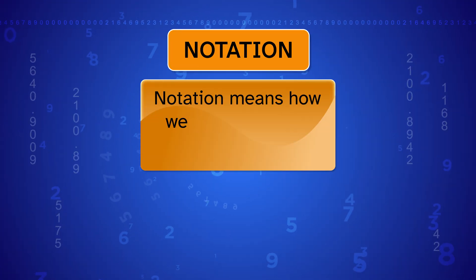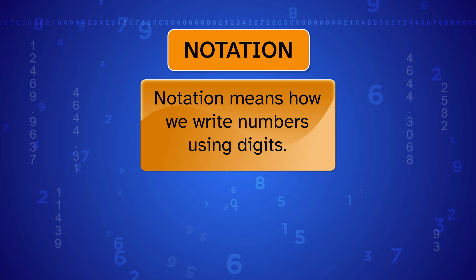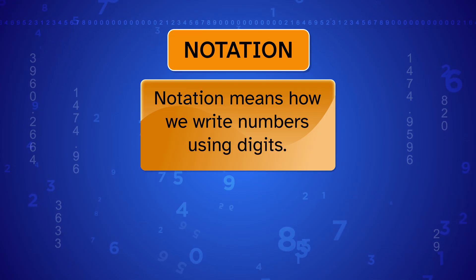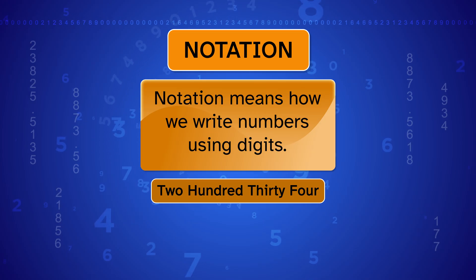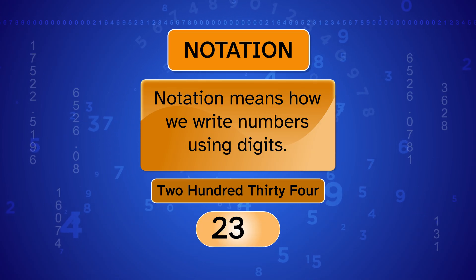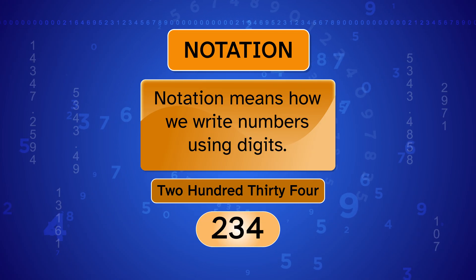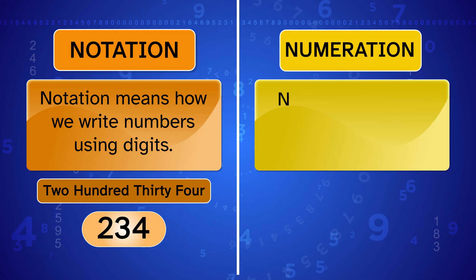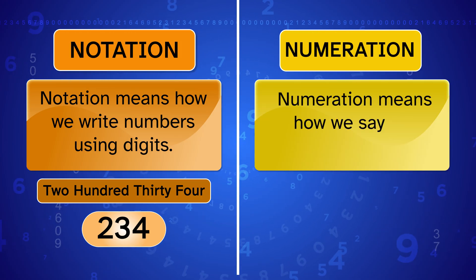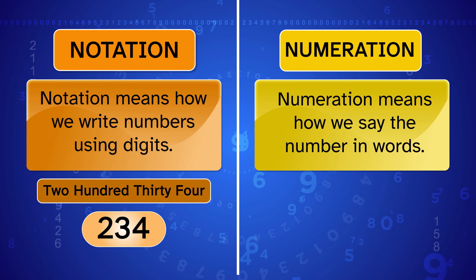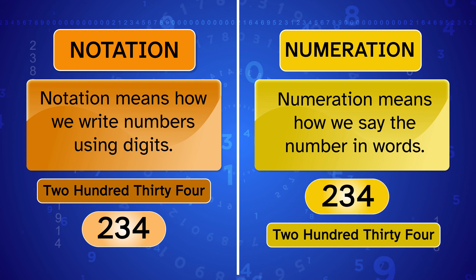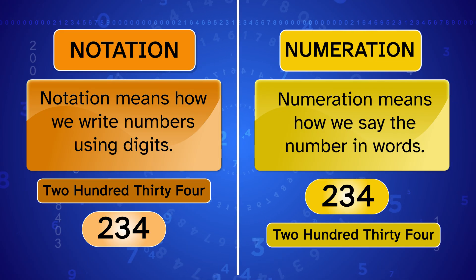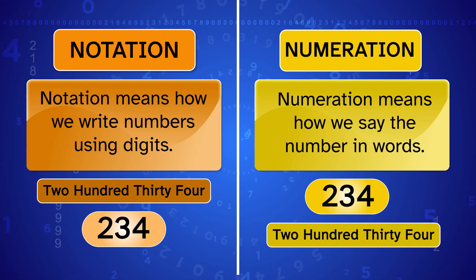Notation means how we write numbers using digits. For example, the number 234 is written as two, three, four. Numeration means how we say the number in words — two, three, four is 'two hundred thirty-four.' When we read 234 as 'two hundred thirty-four,' that's numeration.